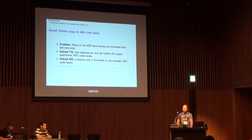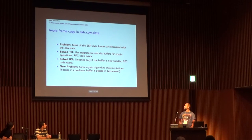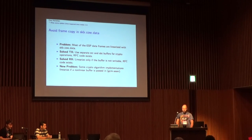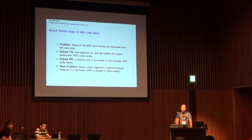On the RX side, we linearize only if the buffer is really not writeable. With these two changes we fixed this in the networking layer, but unfortunately a new problem appeared: some crypto algorithms just linearize if we do not pass a linear buffer. In particular, GCM-AES-I does this. I learned this week that the KTLS people have the same problem, and there is already a better implementation — it's just not in the Linux kernel yet.